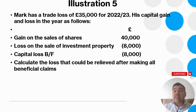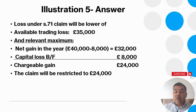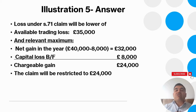Illustration 5 — Mark has a trading loss of £35,000 for 2022-23. His capital gains: gain on sale of shares £40,000, loss on sale of investment property £8,000, giving a net gain of £32,000. Brought-forward capital losses are £8,000. The loss under s71 claim will be the lower of: the available trading loss of £35,000, and the relevant maximum — net gain of £32,000 minus brought-forward capital losses of £8,000 = £24,000. So the claim is restricted to £24,000.